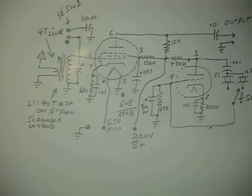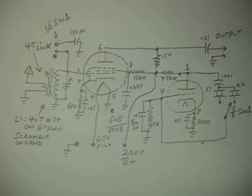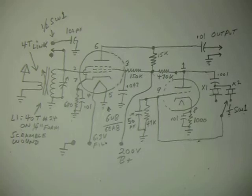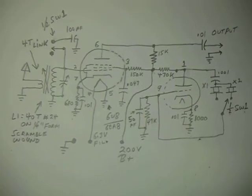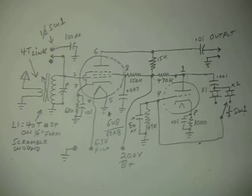You notice too that on pin 1 there is a 470k resistor. That's the B plus coming in to the oscillator, and that little tube only has 35 volts on the plate. It oscillates like crazy.